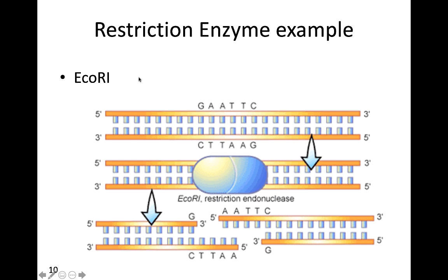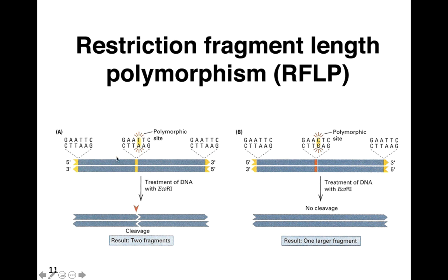One of the most common restriction enzymes we use is called ECO-RI, and it cuts anytime it sees a GAATTC sequence. That happens to be the same going backwards the other way because of how DNA combines with its complementary pair, and it will always cut between the G and the A. Here's an example with two different people: one has GAATTC, so it cuts right there. The other has GAACTC — a different combination — so this particular chemical scissor doesn't cut. So here, one person has one large fragment and the other person has two smaller fragments.